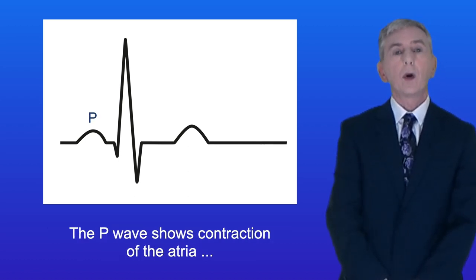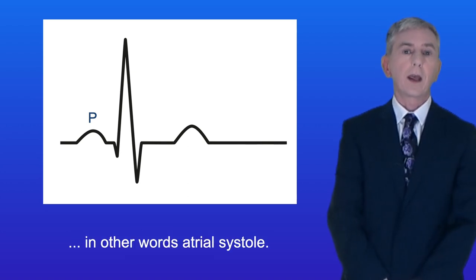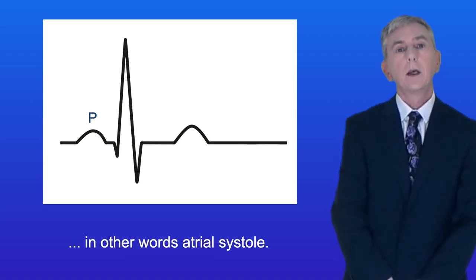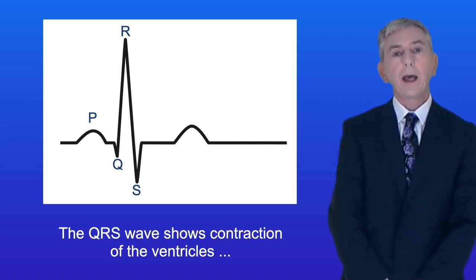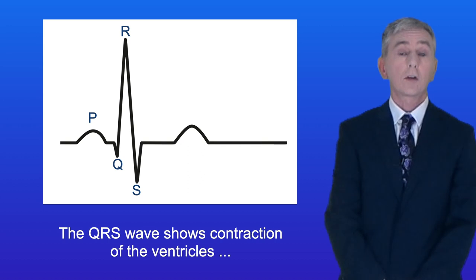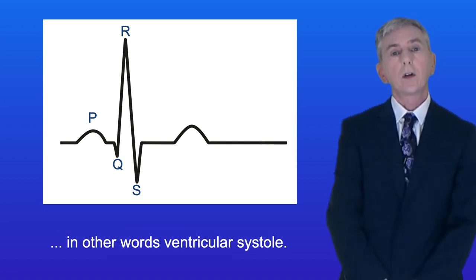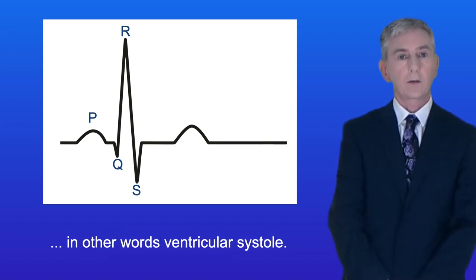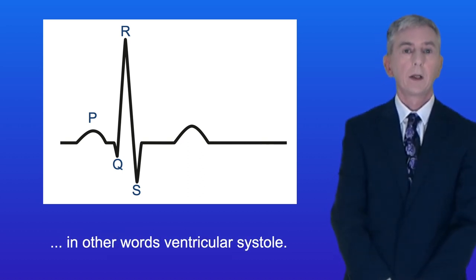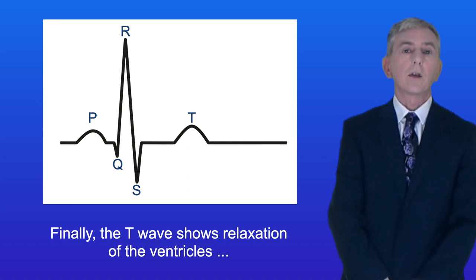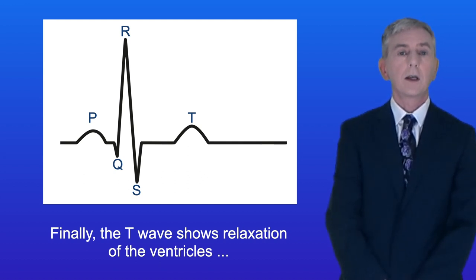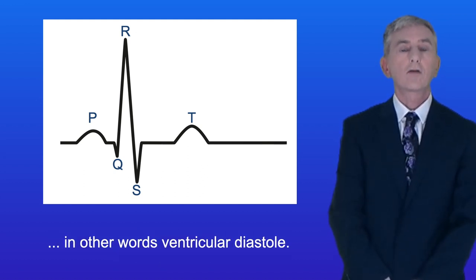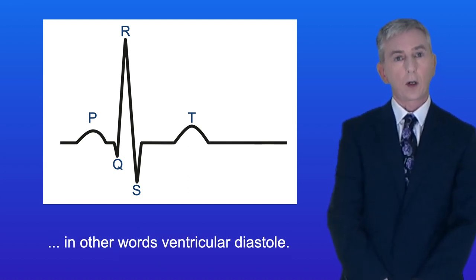The P wave shows contraction of the atria — in other words, atrial systole. The QRS wave shows contraction of the ventricles — in other words, ventricular systole. And finally, the T wave shows relaxation of the ventricles — in other words, ventricular diastole.